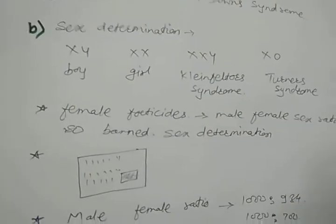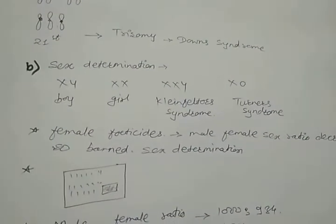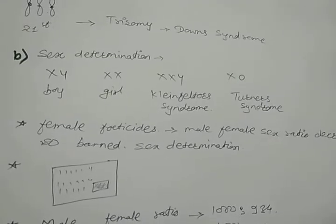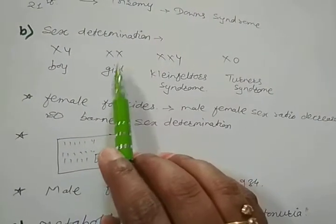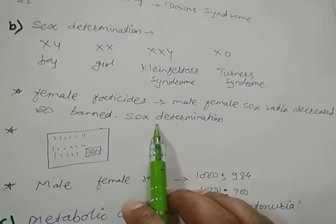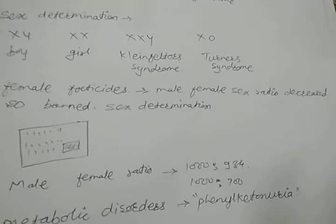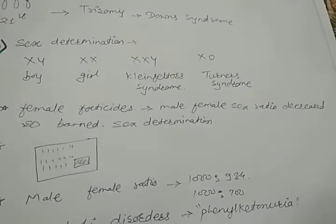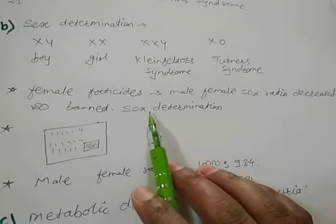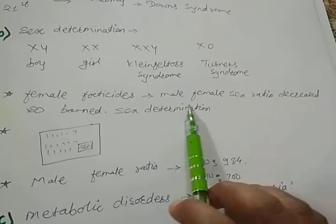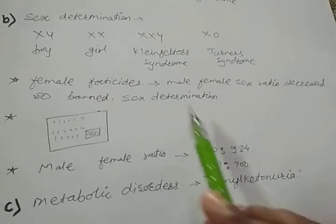Regarding sex determination — in India it is banned for everyone's use; it is only utilized with a doctor's permission. The reason is that when babies are detected as girls (XX), some people kill them — this is called female foeticide. There are different societal reasons and mentality behind this, which increase female foeticide. To avoid this, the government has banned sex determination, because the male-to-female sex ratio has become very low due to female foeticide.